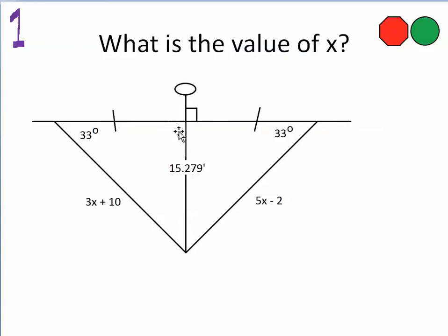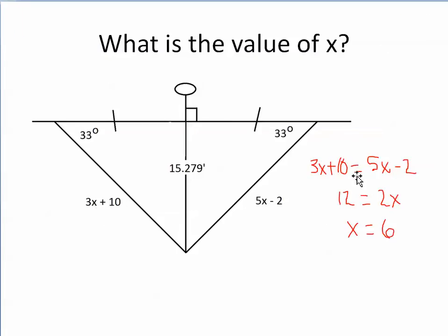We know they are right triangles because of the right angle symbol — 90 degrees here, 90 degrees there. The length of the hypotenuse of one right triangle is hidden in the expression 3x plus 10, and the other hypotenuse is hidden in 5x minus 2. Setting them equal: 3x + 10 = 5x - 2. Adding 2 to each side gives 3x + 12 = 5x. Subtracting 3x gives 12 = 2x, so x equals 6.